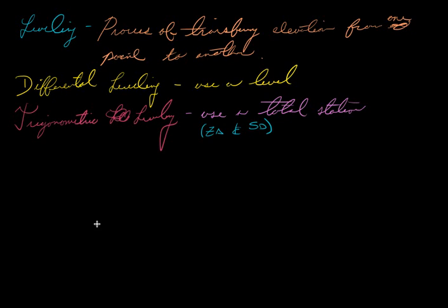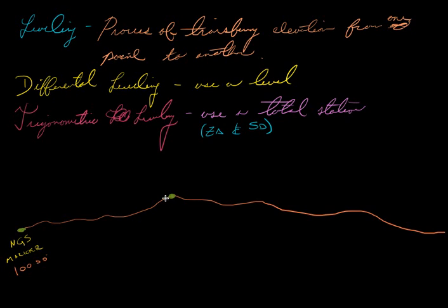Say that you have, here's the ground surface. You have some points here. Here's your first point, and here is your second point. Say this is some kind of NGS marker. NGS is the National Geographic Survey. These you can find all around the US and it will have an elevation assigned to it online. Say that the elevation assigned to this one is 100 feet.